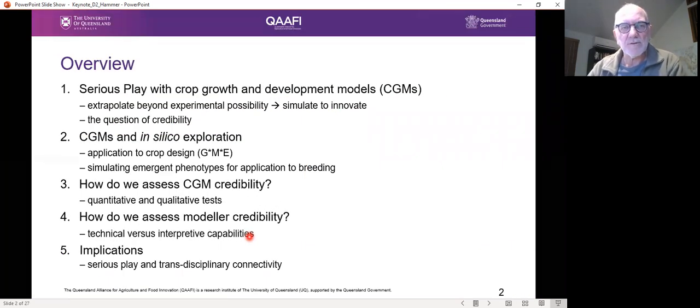So there are five sections to the presentation. The first one is about serious play with crop growth and development models that I just call CGMs. The point there is about extrapolating beyond experimental possibility so that one can use simulation as a means to innovate, and this introduces the question of credibility, which is an area I want to focus on throughout the talk. The second section is about CGMs and in silico exploration. One in relation to application to crop design, genotype by management by environment interaction for a sorghum case study, and another one on simulating emergent phenotypes for application to breeding. So the first one is more agronomic, and the second one is more relation to breeding and genetics.